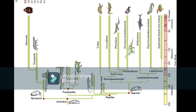Diapsids diverged into archosauromorphs and lepidosauromorphs. From lepidosauromorphs we get lizards, snakes, tortoises, and organisms like ichthyosaurs. From archosauromorphs, dinosaurs and birds evolved, along with turtles and crocodiles. Turtles evolved from archosauromorphs — not lepidosauromorphs as I may have misstated earlier.